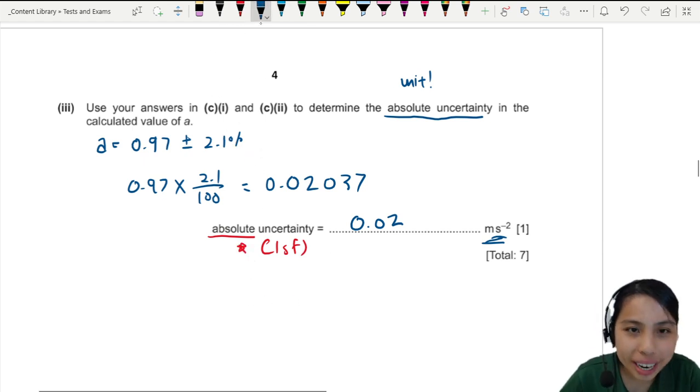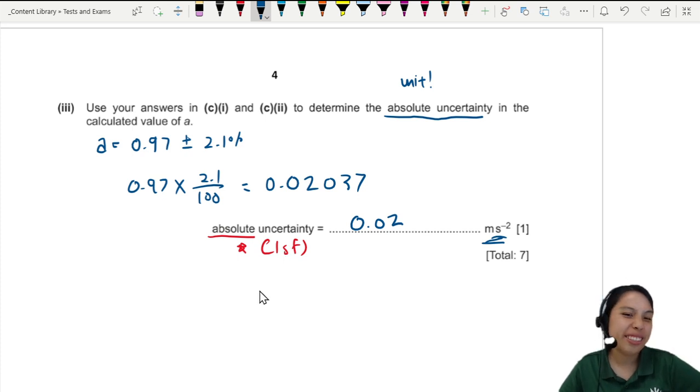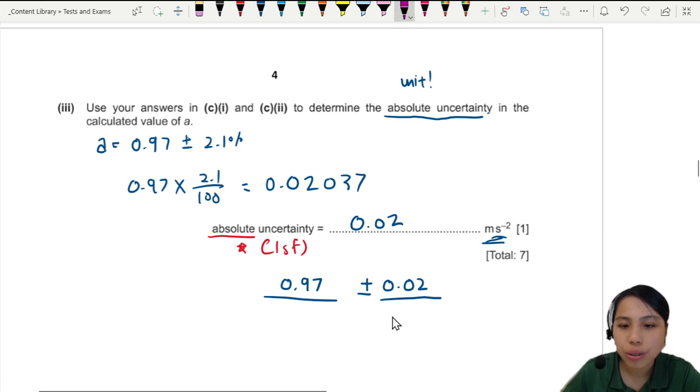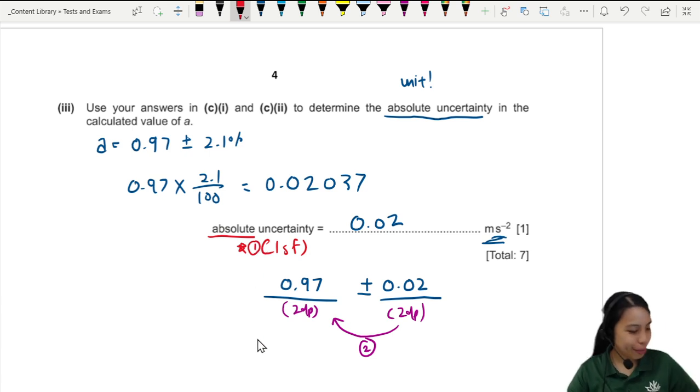Now, if they ask you to write the final answer, you can have that sometimes. Plus minus, they'll leave a blank like this. First step, you round off to 1 SF and you write 0.02. Second step, you make sure your value matches the same decimal place. So, if this is 2 decimal places, you follow and you also round this off to 2 decimal places. So, this is step 2. Step 1 will be this one. Make sure your absolute uncertainty is in 1 SF. But yeah, that's all for this intro question.